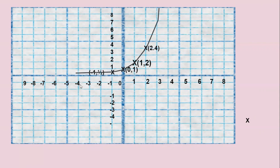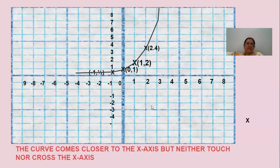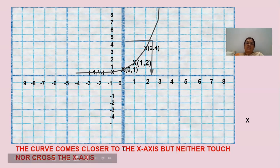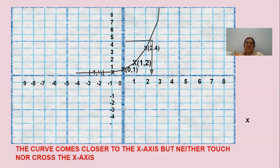Closely observe the curve — it does not touch the x-axis, nor will it cross the x-axis. The curve comes closer to the x-axis but neither touches nor crosses it. From this graph, we can find the value of x. Previously we had the problem 5 equals 2 to the power of x. Taking y equal to 5 on the y-axis, joining to the curve and drawing a perpendicular to the x-axis, the point is somewhere about 2 point something — so approximately x will be 2 and a bit more.